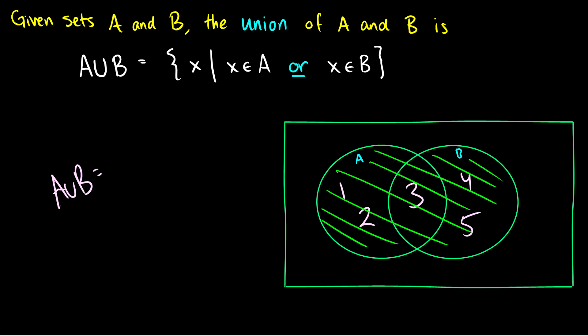So visually this would look like both of these sets completely covered. So A union B would be the set containing 1, 2, 3, 4, and 5.